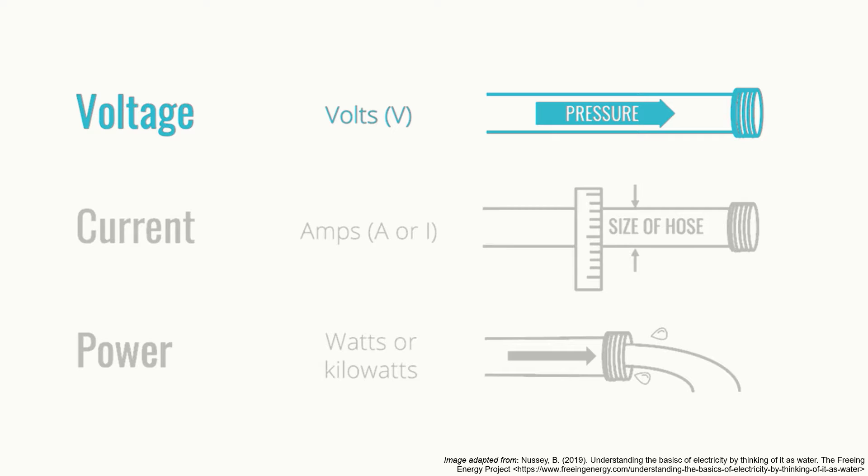Voltage measures how strongly the electricity is being forced through the wire and is measured in volts. Voltage is often a good indicator of the compatibility of different system components — for instance, a 12-volt appliance can typically be connected to a 12-volt battery. Current, on the other hand, describes how much electricity is flowing through the conducting wire and is measured in amps. In the garden hose analogy, a wider hose will allow more water to flow through, just as a heavier gauge of wire will transmit more electricity. Amp ratings are helpful in determining the size of conducting wires needed to connect electrical components. If the wire is not large enough to carry the load, then excess energy will be given off as heat, potentially damaging the wire in the system or possibly starting a fire.